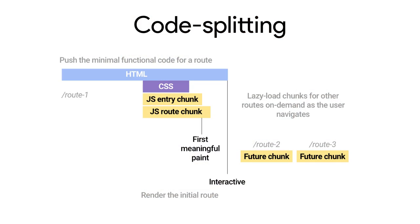Code splitting is basically the way you say this bundle should consist of these files — that's bundle one, that's bundle two, that's bundle three. Splitting is the act of deciding where those lines are. And if you're doing it intelligently, maybe you're just going to ship down the smallest amount of JavaScript necessary for a route or a view to your users, and then lazy load in the rest.